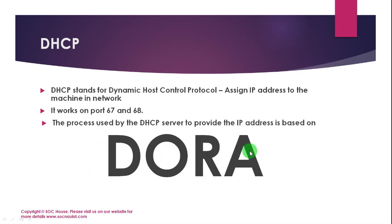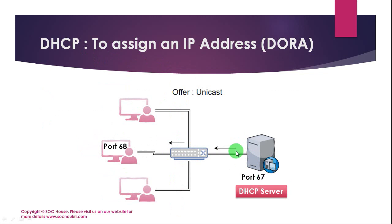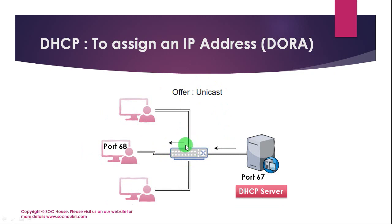Discover is a broadcast message sent from the client machine to the DHCP server in the network. The Offer is a unicast message sent to the client machine, containing all information from the server — like the IP address of the system which will be provided, the IP address of the gateway, DNS server, and other parameters.